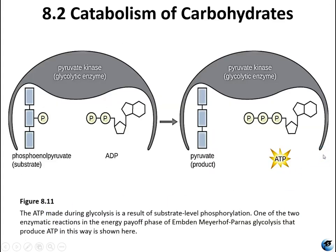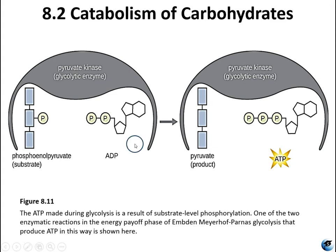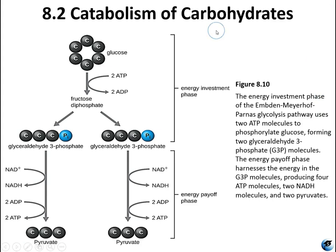Figure 8-11 shows ATP made during glycolysis via substrate-level phosphorylation, in one of the two enzymatic reactions in the energy payoff phase. Here we have pyruvate kinase, an enzyme, with its active site binding two substrates: phosphoenolpyruvate and ADP. Phosphoenolpyruvate is the phosphorylated compound — it gives up its phosphate group, which is added directly to ADP to form ATP. This is substrate-level phosphorylation, so named because substrates bind to an enzyme's active site and produce ATP.